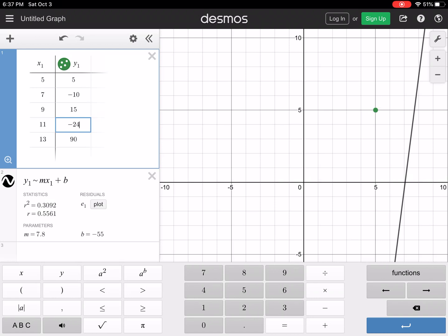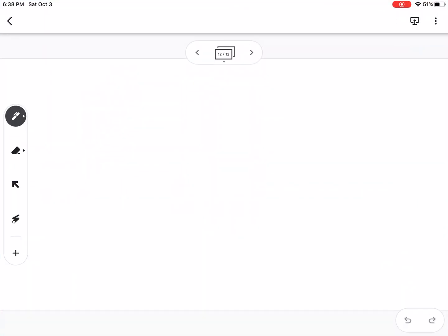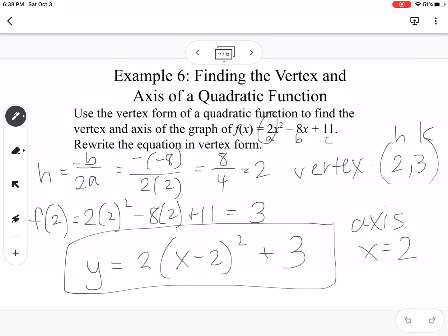So that is what you want to do if you are trying to determine the linear association and the correlation of your table or your data points. So that is lesson 2.1. Let me know if you have any questions.